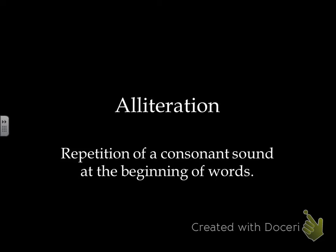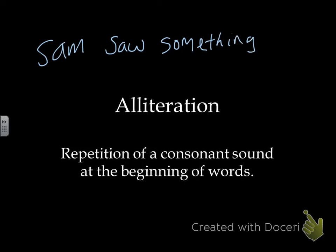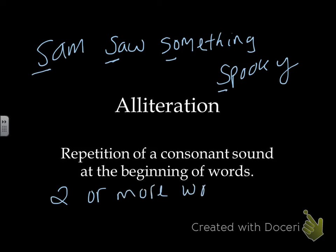Alliteration is the repetition of consonant sounds at the beginning of words. For example, 'Sam saw something spooky' — all of those words begin with the letter S. You want two or more words in a row in order for it to be considered alliteration.